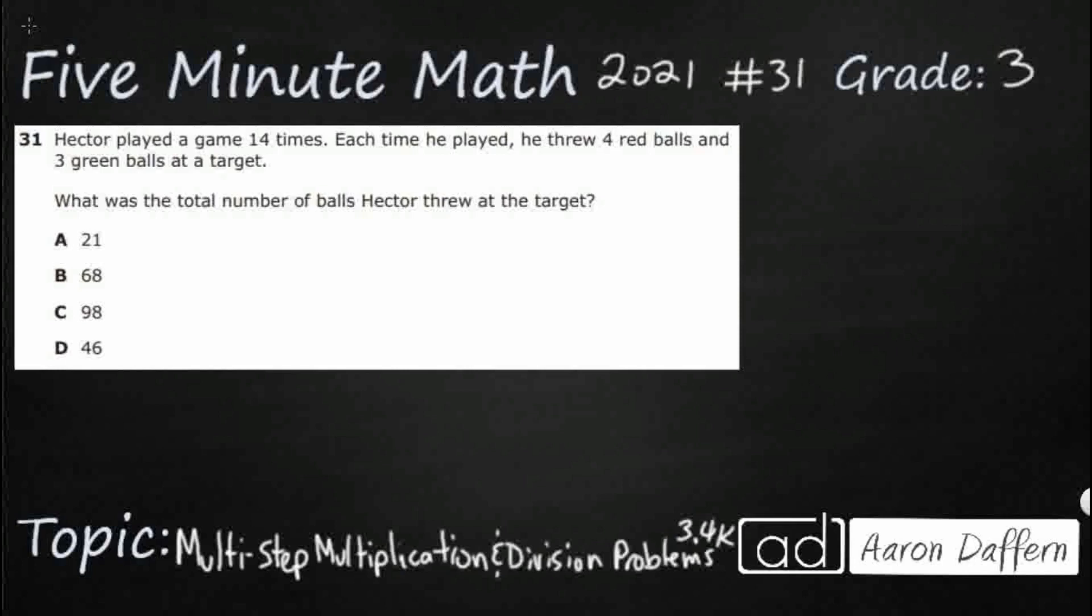We have Hector. He's playing a game 14 times. Each time he played, he's going to throw four red and three green balls at a target, so we need to know the total number of balls that he threw at the target. There's a few different ways that we can solve this problem. Let me show you each of them here.